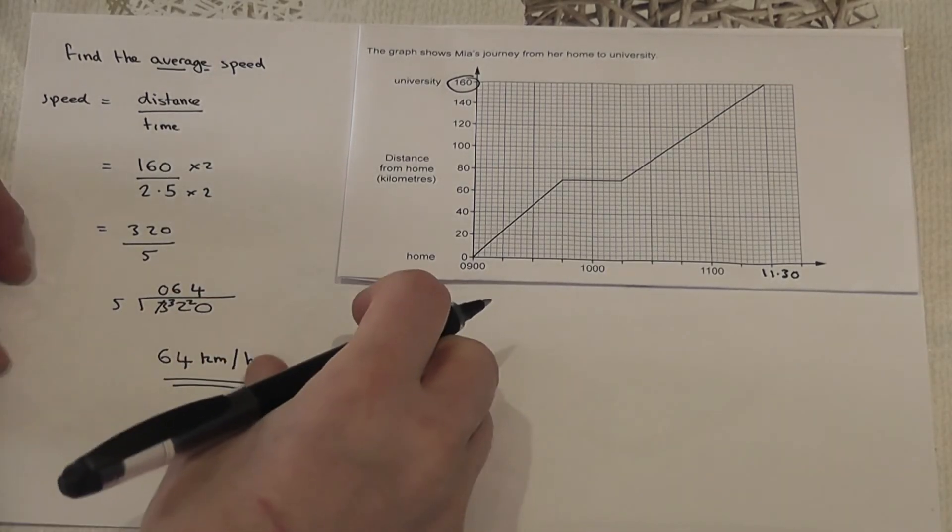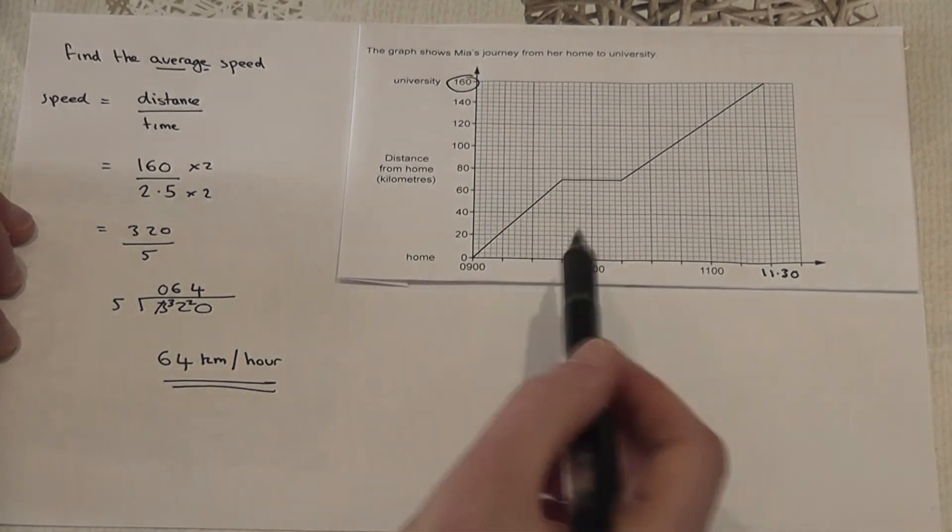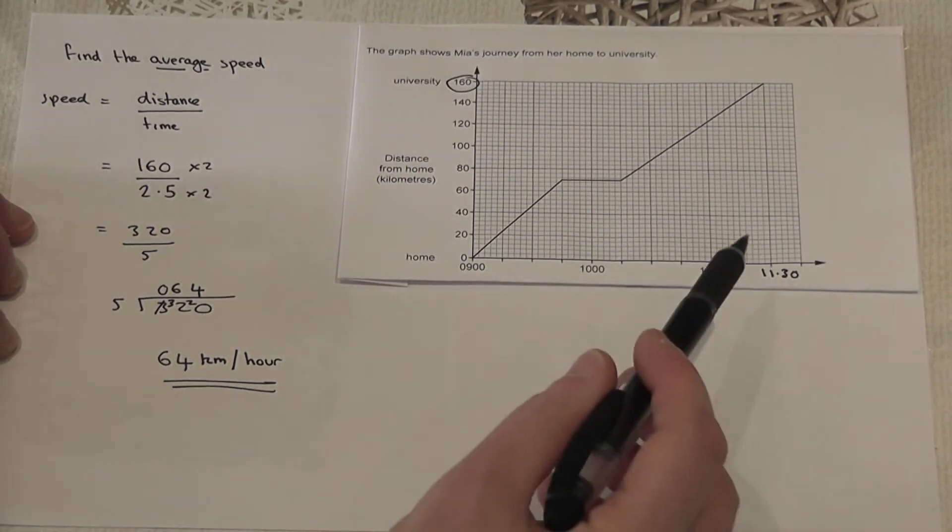So again to find the average speed it's the total distance divided by the total time.